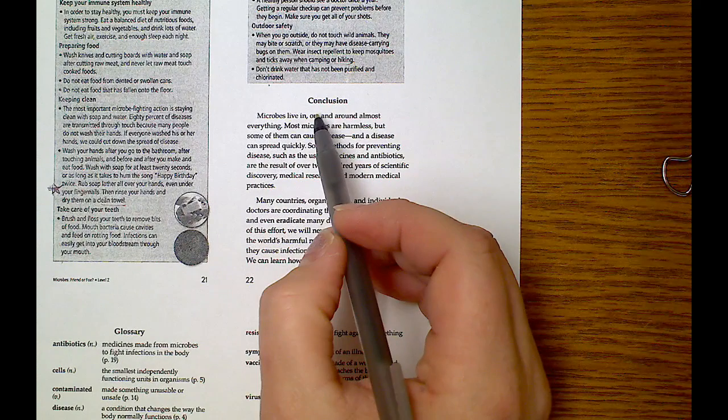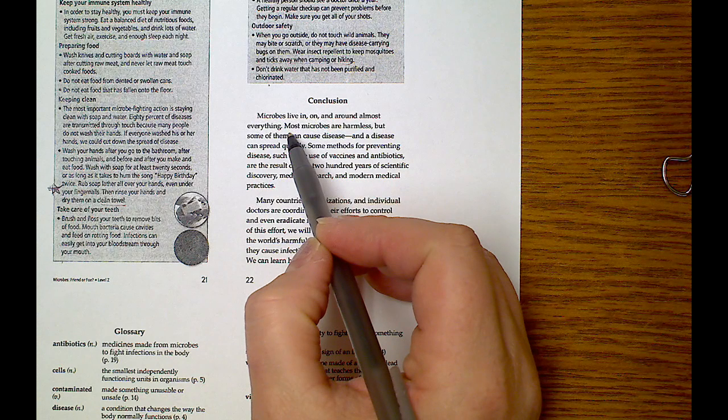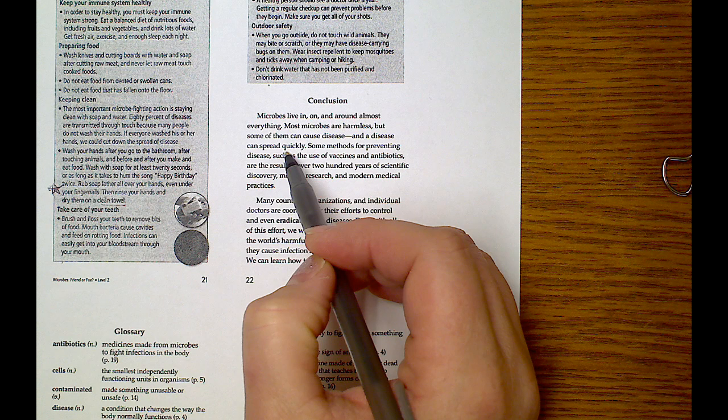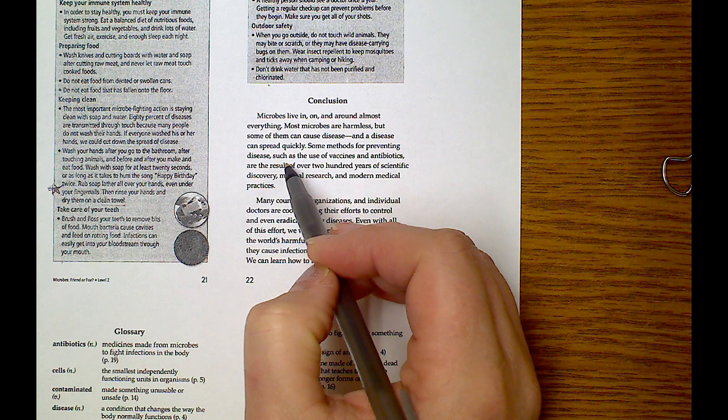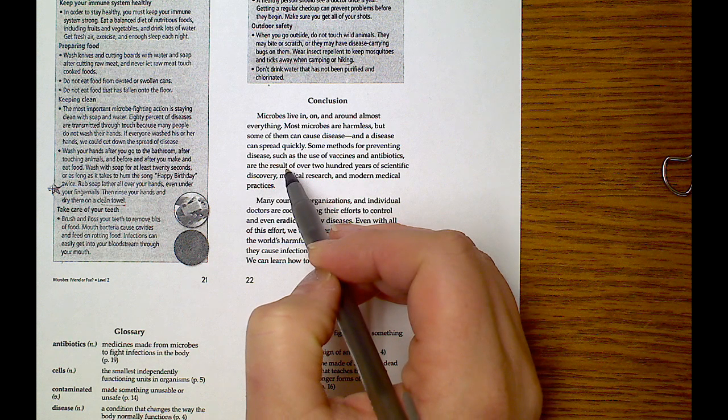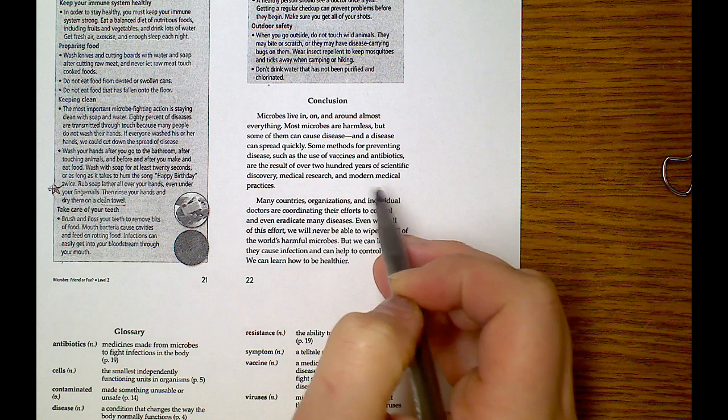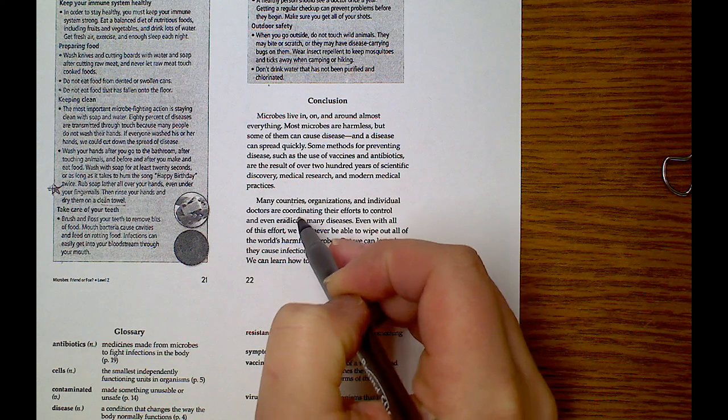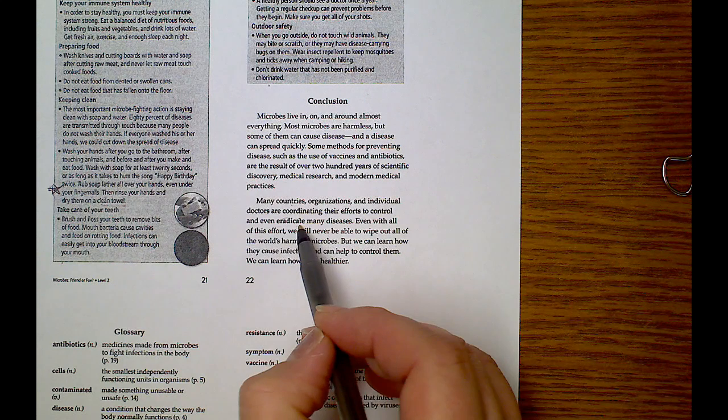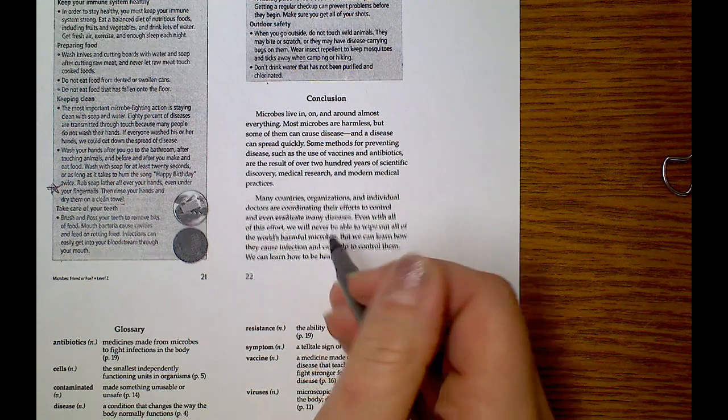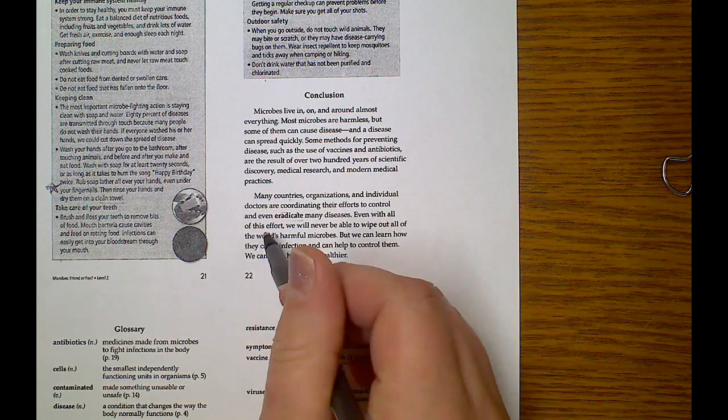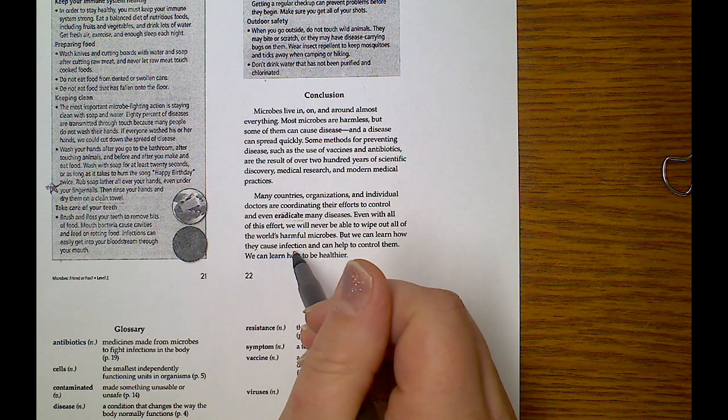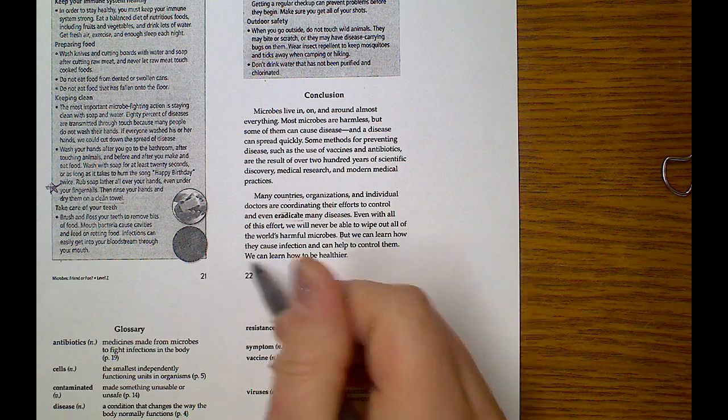Conclusion. Microbes live in, on, and around almost everything. Most microbes are harmless, but some of them can cause disease, and disease can spread quickly. Some methods for preventing disease, such as the use of vaccines and antibiotics, are the result of 200 years of scientific discovery, medical research, and modern medical practices. Even with all of this effort, we will never be able to wipe out all of the world's harmful microbes, but we can learn how they cause infection and can help to control them. We can learn how to be healthier.